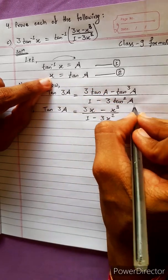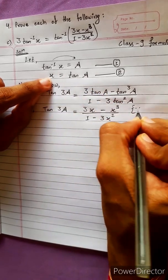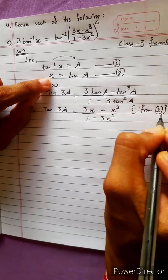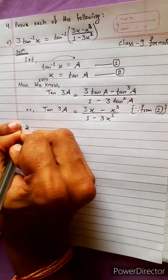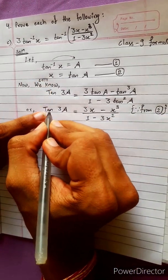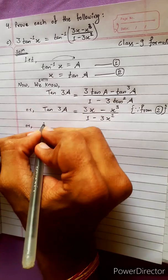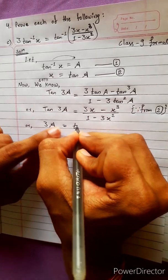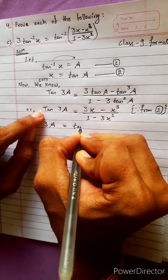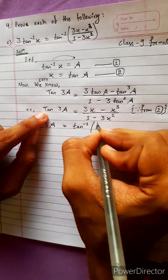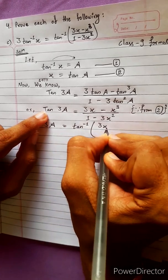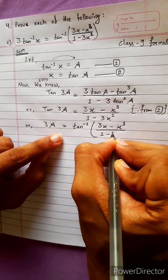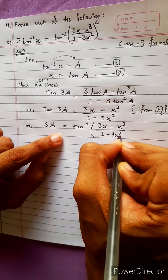From equation 2, okay, we got this: 3a equals tan⁻¹ of (3x minus x³), upon 1 minus 3x².